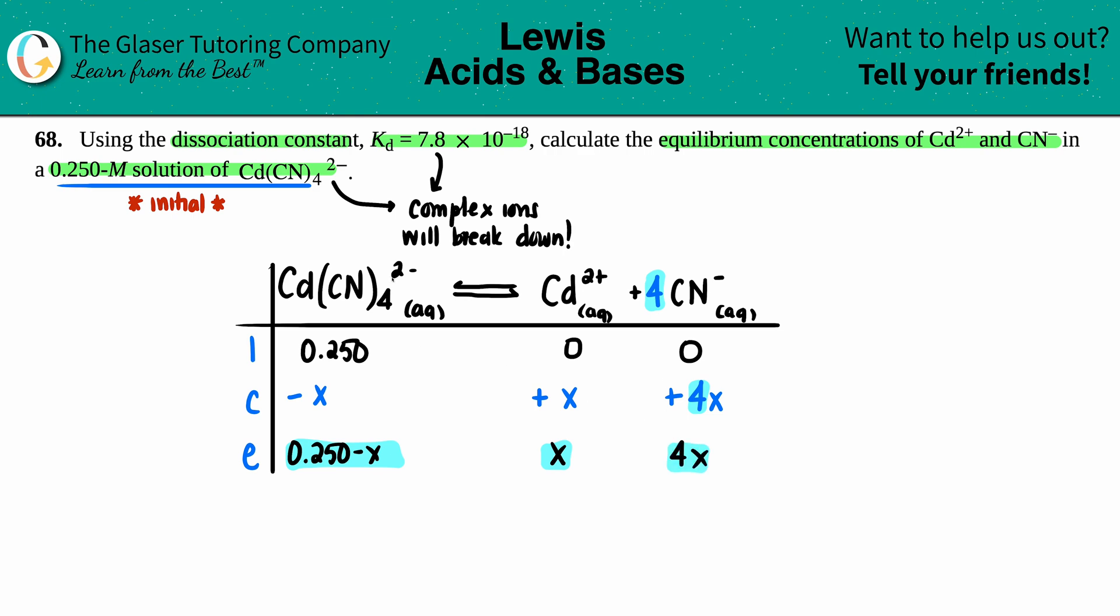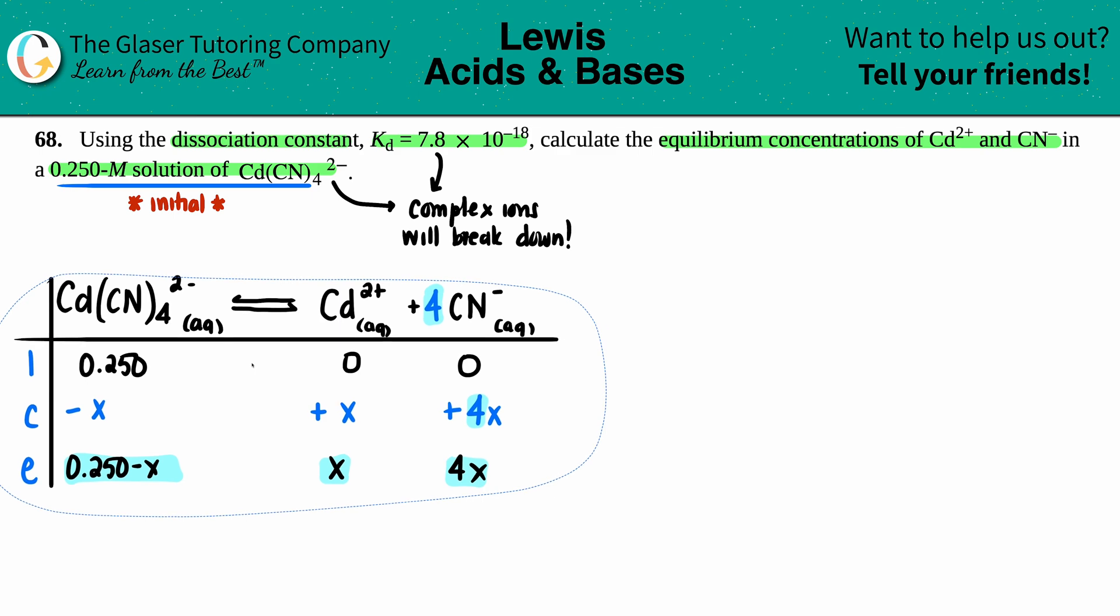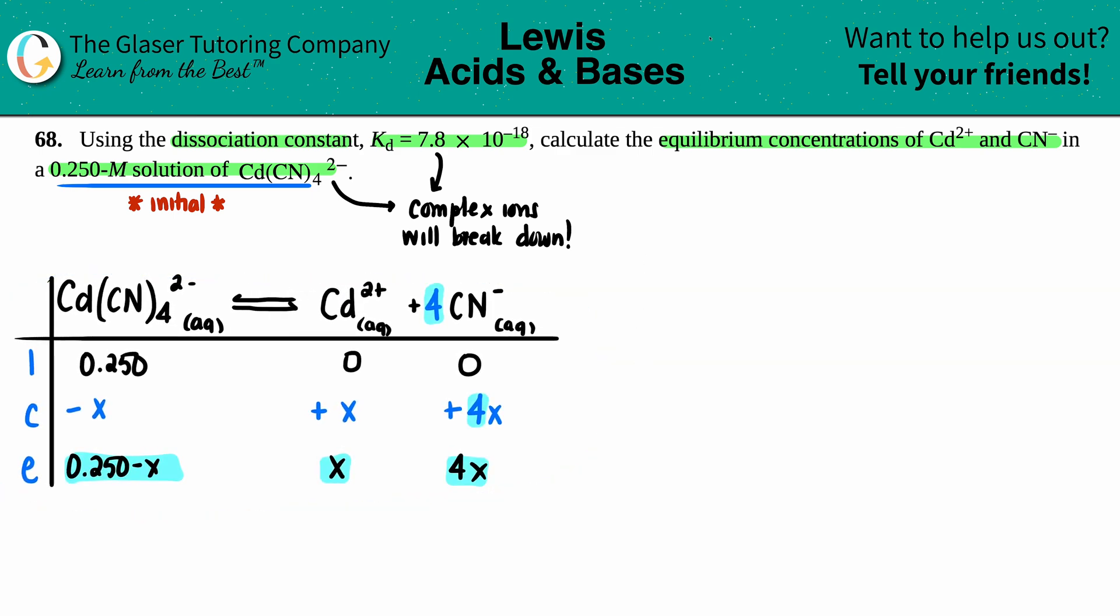Since we're dissociating, we're going to use the Kd value. Just like any K value, it's always products divided by reactants. We have two products, both aqueous, so Kd = [Cd2+] times [CN-]4 divided by [Cd(CN)4 2-]. Since there's four of them, I have to raise that to the fourth.